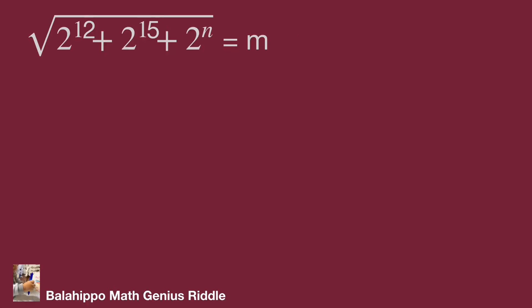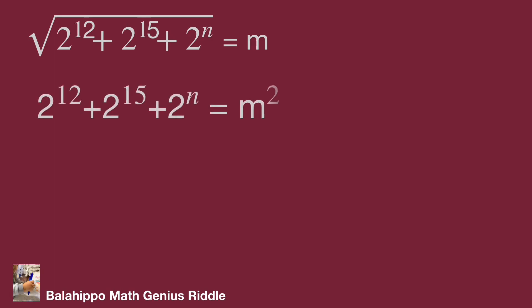The question is: square root of 2 to the power of 12 plus 2 to the power of 15 plus 2 to the power of n, equal to m. Let's start by squaring both sides of the equation. Then we have 2 to the power of 12 plus 2 to the power of 15 plus 2 to the power of n equal to m squared.